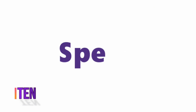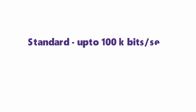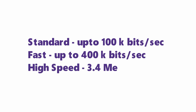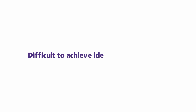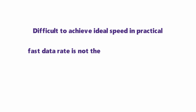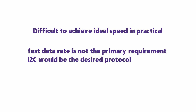The tenth secret is speed. I2C supports three different speeds: standard mode up to 100 kbps, fast mode up to 400 kbps, and high-speed mode up to 3.4 Mbps. However, these are theoretical speeds and cannot be achieved in practical applications, as the actual speed depends on different factors. If fast data rate is not the primary requirement, I2C would be the desired protocol.